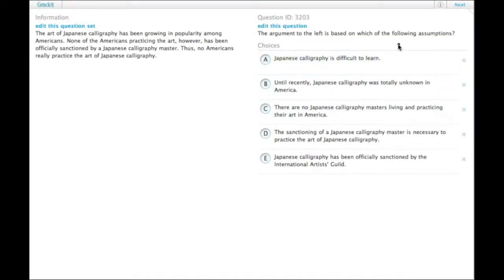We're told to look for the assumption in the argument. It's important to remember that the evidence plus the assumption equals the conclusion. The conclusion is that no Americans really practice the art of Japanese calligraphy.